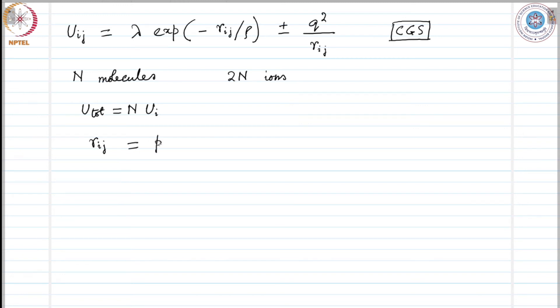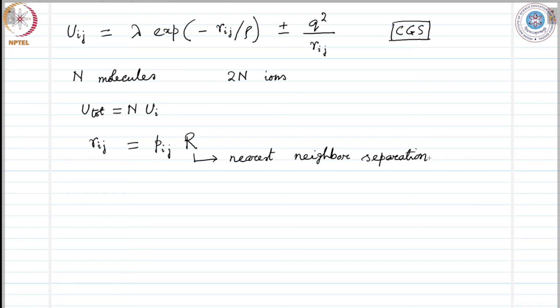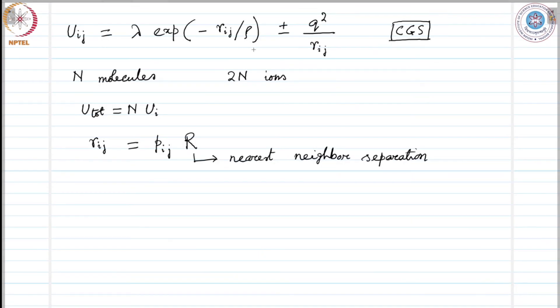We introduce p_ij terms: r_ij, the distance between two ions, is written as p_ij times R, where capital R is the nearest-neighbor separation. We include the repulsive interaction only among the nearest neighbors. The exponential repulsive interaction arises from overlapping electron clouds and Pauli exclusion principle, so it won't be valid for ions far apart — this assumption is quite valid.